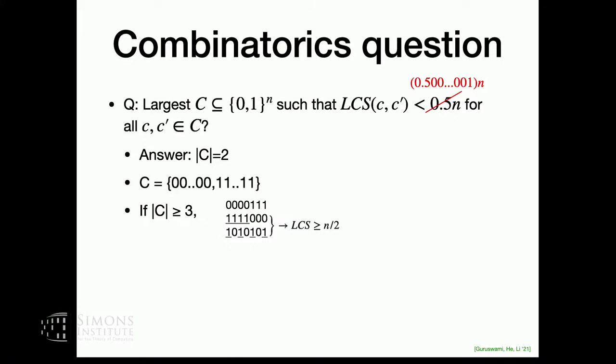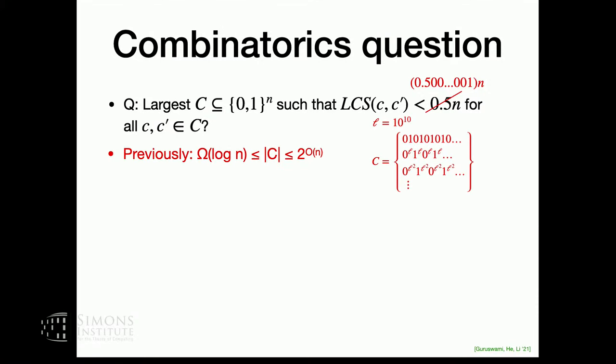Now let's relax this a bit. This is a very simple question with a simple solution. Now let's say we want pairwise LCS of n over two plus epsilon n, for some absolute epsilon. This is a relaxation, so it's a relaxing constraint, so potentially we could find more strings. So now the question is, how many strings can we find? This turns out to be quite a difficult question.